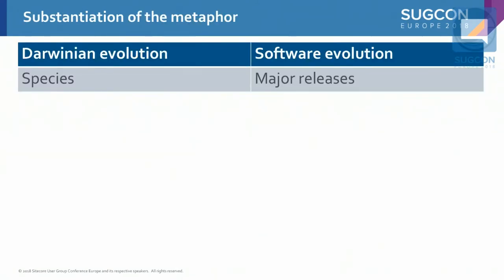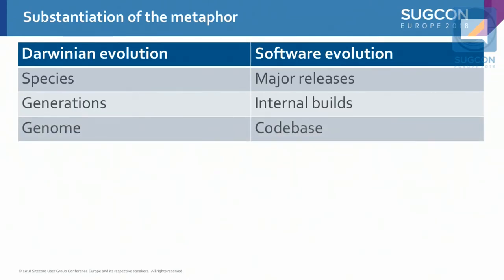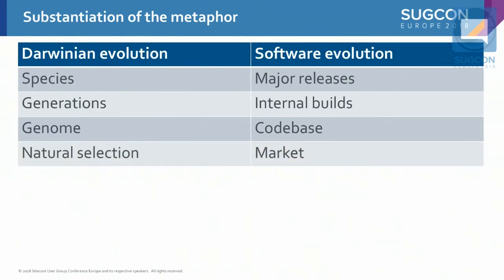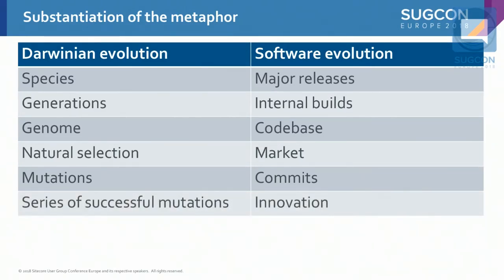I can draw some parallels for you. In Darwinian evolution, you have species. In software evolution, you have major releases that are supposed to be very different from previous releases. You have generations in real life, and you have internal builds in software development. Where you have genome in biology, you have code base in software. You have natural selection that decides what survives and what doesn't, and in software, the market decides. Biological organisms mutate, and so do software products — by source control commits. When you have a series of successful mutations, you have innovation, both in biological organisms and in software.